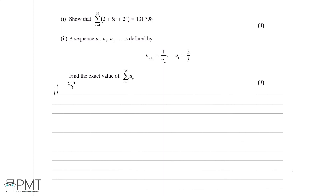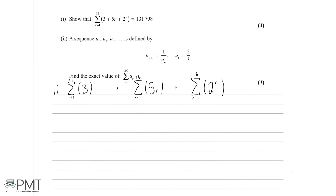The first thing we're going to do is split up the sum into its three constituent parts to make it a lot easier to deal with. So we'll have the sum from r=1 to 16 of 3, plus the sum from r=1 to 16 of 5r, plus the sum from r=1 to 16 of 2 to the power of r — the exact same sum, just split into three different parts.